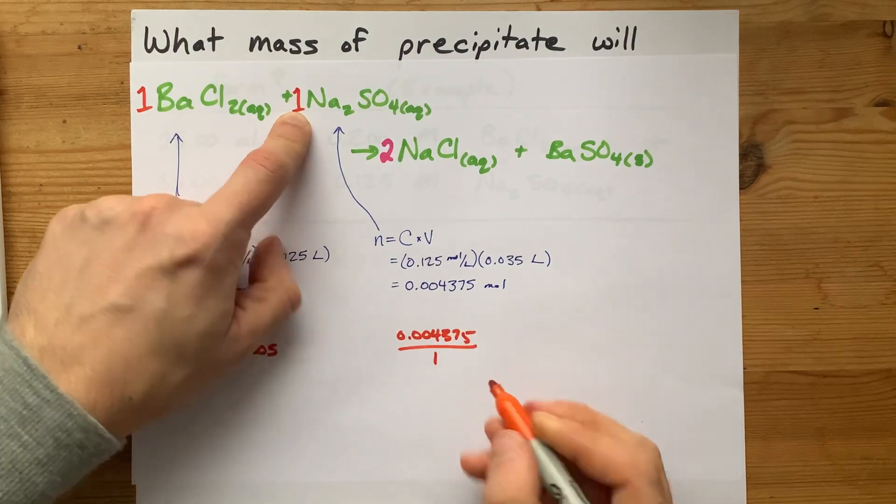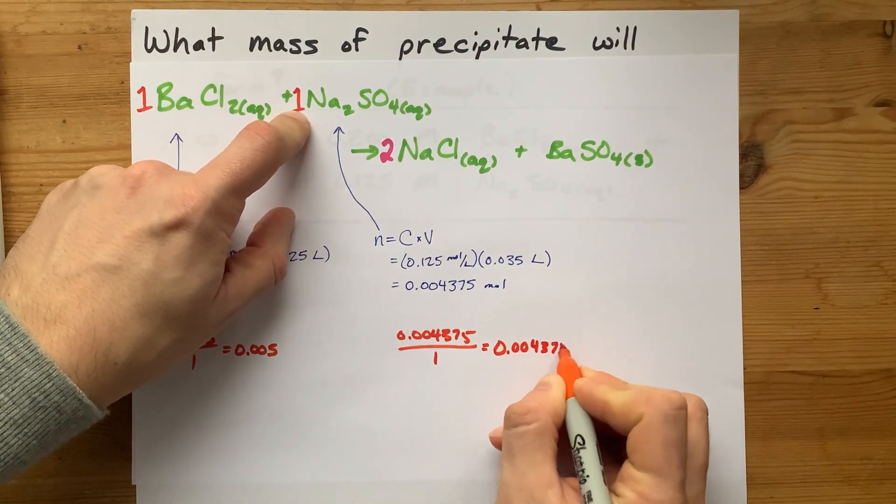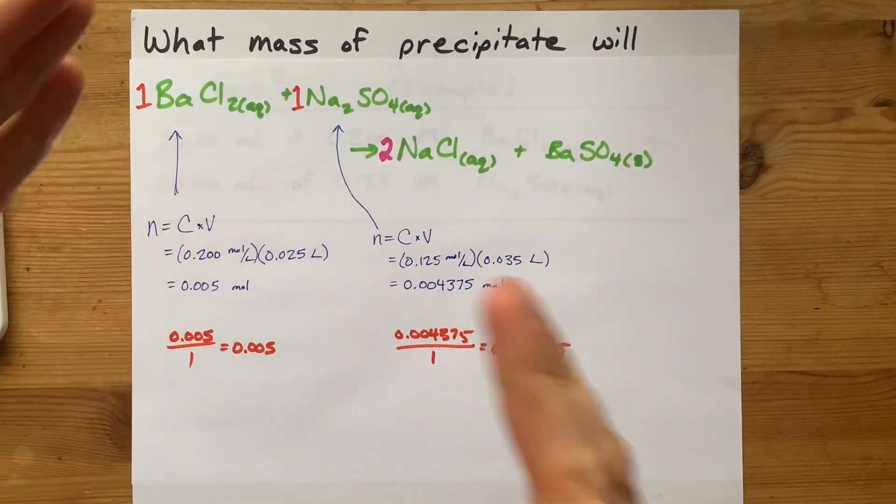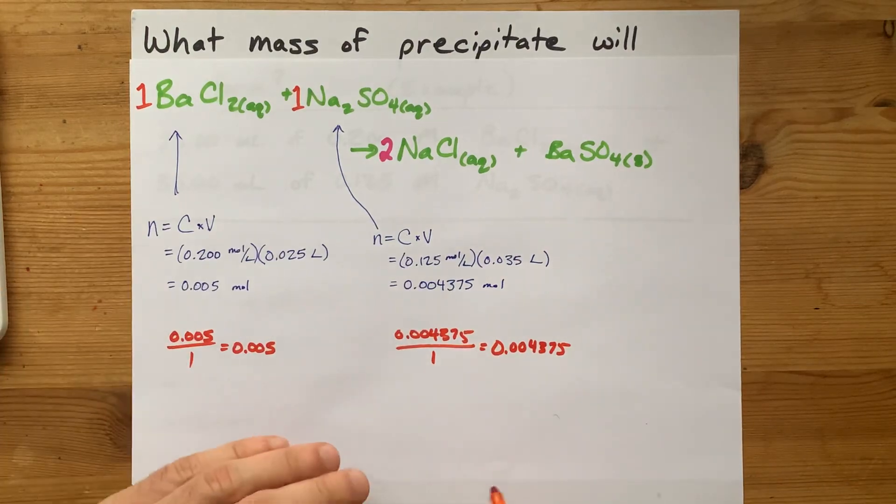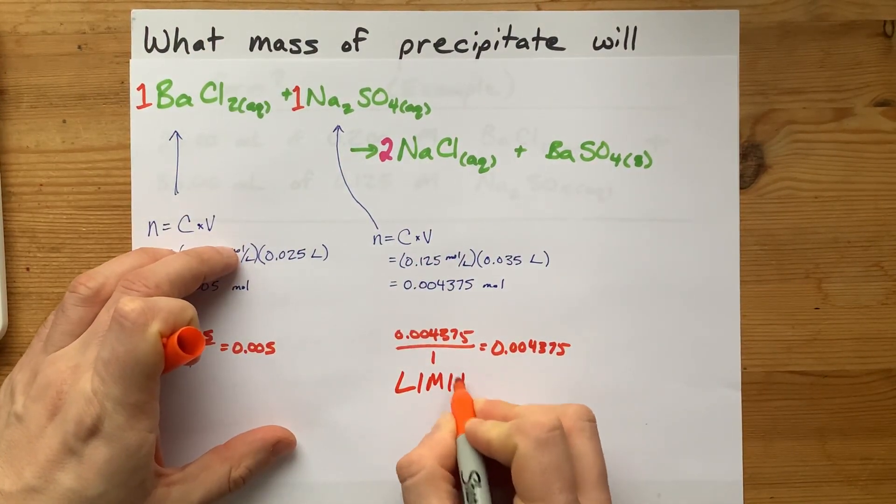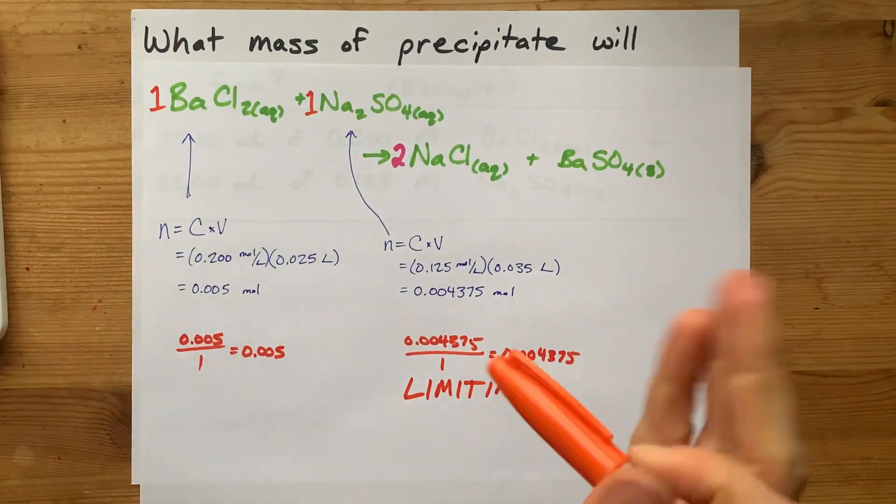That's why it's important to have the balanced chemical equation. After you do that division, whichever one of those resulting numbers is smaller is corresponding to your limiting reactant. In this case, it's exactly as we thought. The limiting reactant here is the sodium sulfate. Great.